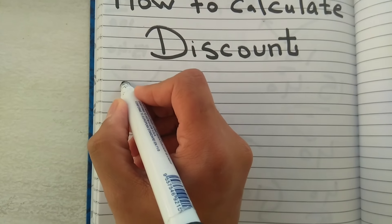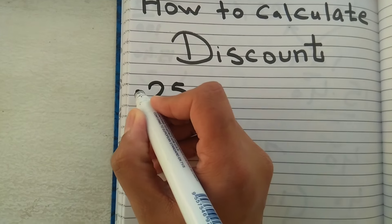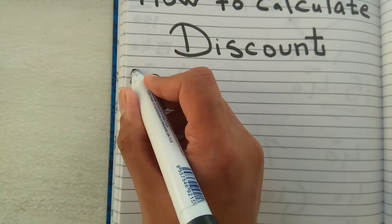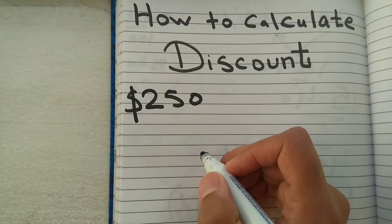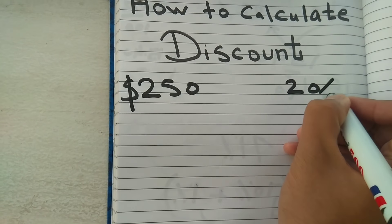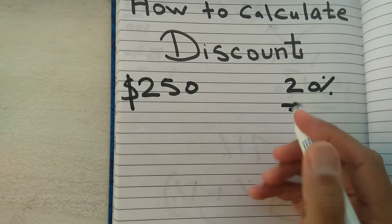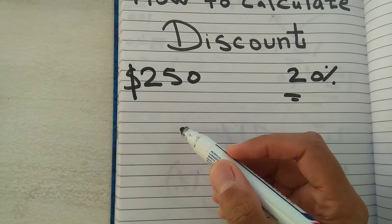If you go to a shop and they say they have an item which is $250 (or rupees, whatever you want), and they're giving 20% off, in that case, how can you calculate how much the 20% discount will be?